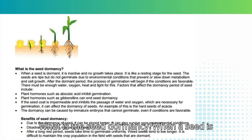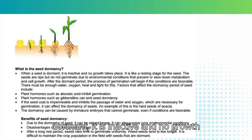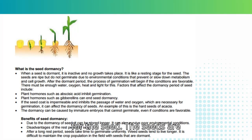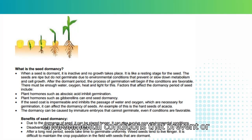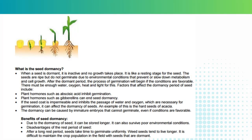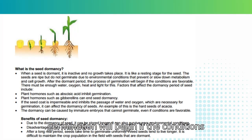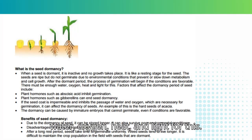What is seed dormancy? When a seed is dormant, it is inactive and no growth takes place — it is like a resting stage for the seed. The seeds are ripe but do not germinate due to environmental conditions that prevent or slow down metabolism and cell growth. After the dormant period, the process of germination will begin if the conditions are favorable; there must be enough water, oxygen, heat and light for this.